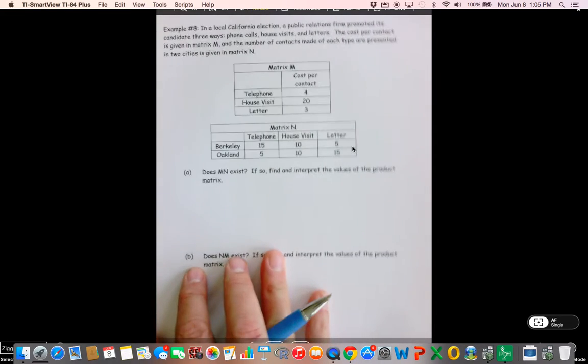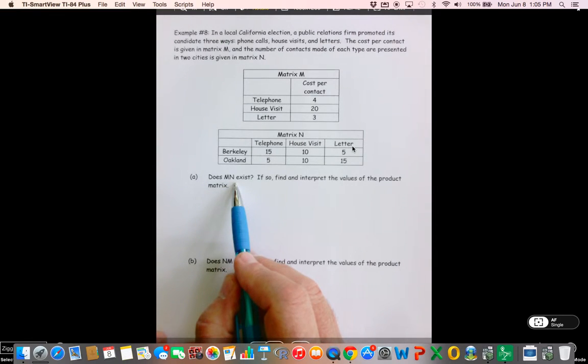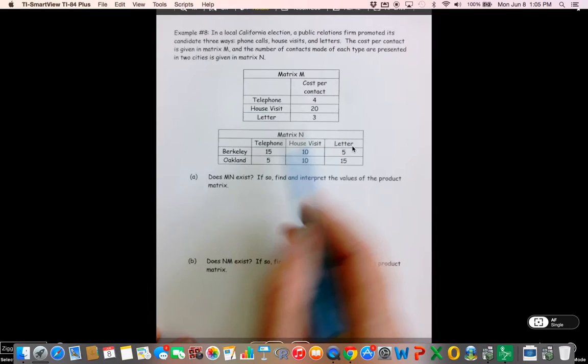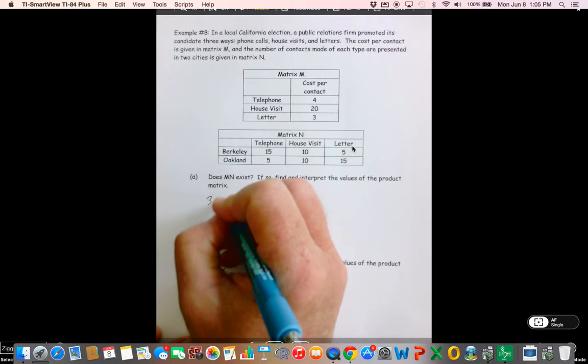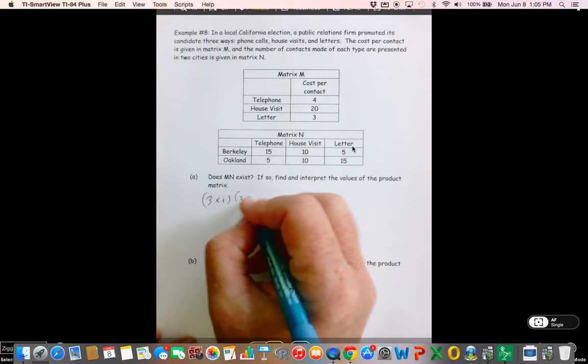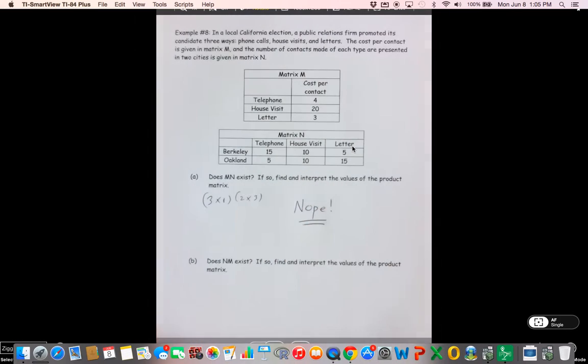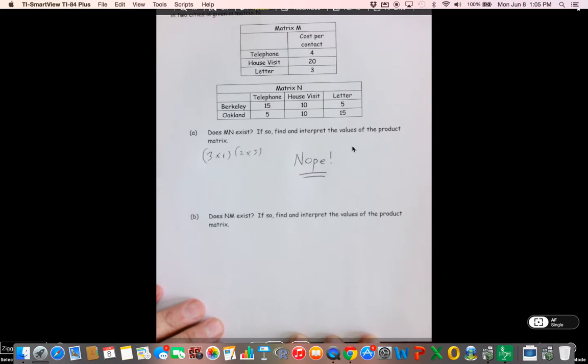Alright, let's see if we learned anything from previous stuff. In a local California election, a public relations firm promoted this candidate three ways: phone calls, house visits, and letters. We get a cost per contact and we have it in two cities. Alright, does MN exist? Well, M is a 3 by 1 and N is a 2 by 3. That has nothing to do, nope. Not even consideration. Not even close.